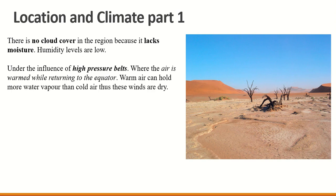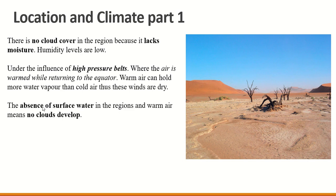Under the influence of high pressure belts, air is warmed while returning to the equator. Warm air can hold more water vapour than cold air, but these winds are dry. There's high pressure which results in warm air, and warm air can hold moisture — but where does this moisture come from? In Ireland, warm air picks up moisture from the Atlantic Ocean and from rivers and lakes. But here there are no oceans, no rivers, no lakes. So this warm air does not pick up any moisture, resulting in really warm, really dry air. The absence of surface water — lakes, rivers, etc. — means that no clouds develop. The air is warm and warm air would cause evaporation, but with no water it's like turning on a kettle with no water in it — there's going to be no evaporation. So no clouds develop.